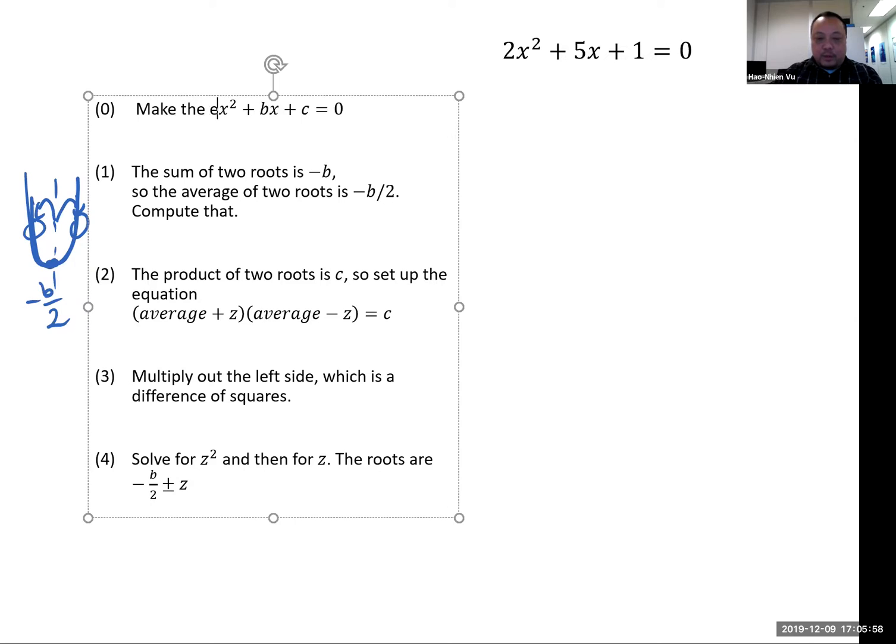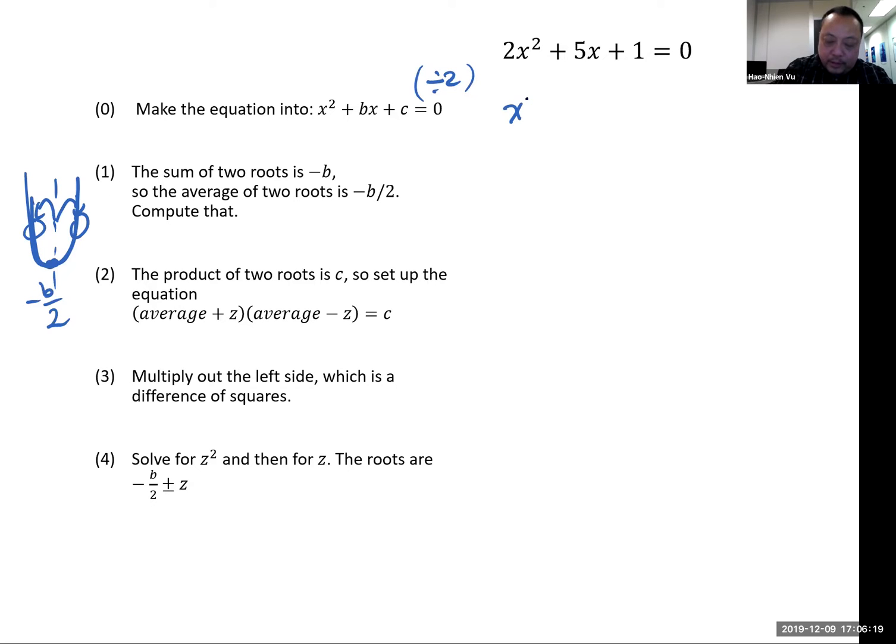Step 0 is make the equation into an equation with a equals to 1. And we do that by dividing it off. So we're going to divide the whole thing by 2. We end up with x squared plus 5 halves x plus 1 half is equal to 0. The sum of the two roots is negative b, meaning negative this new b, not the original one. So the average is negative 5 halves, and I divide that by 2, and that gets me negative 5 fourths.